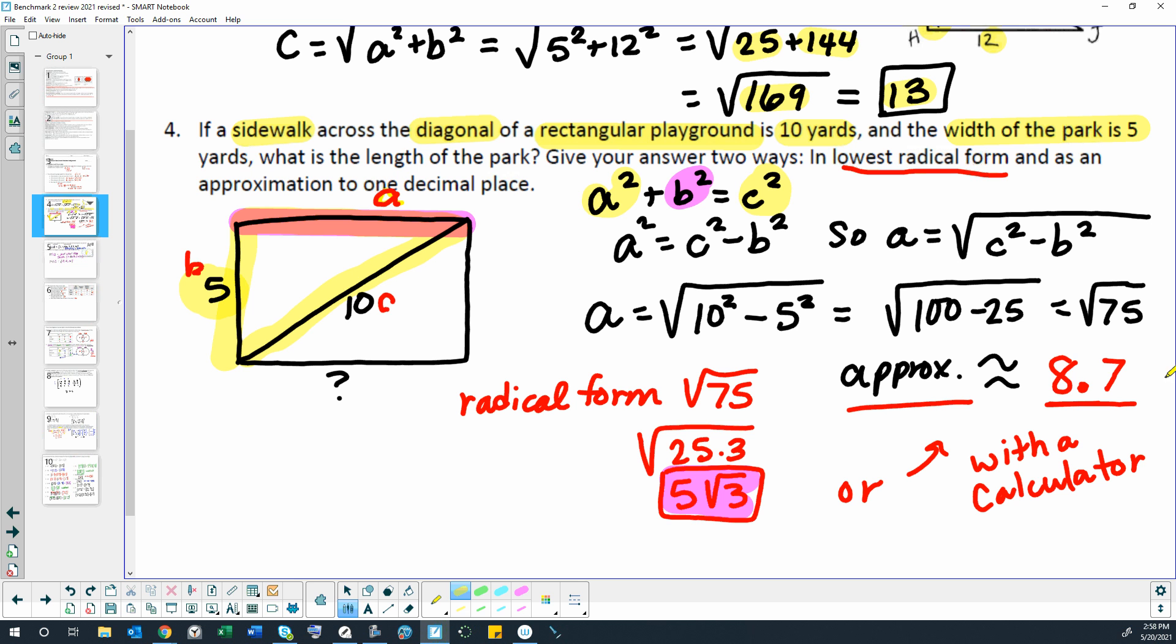Our lowest radical form is 5 square root of 3. That's an exact answer, but really for all practical reasons, we're just going to want the approximate 8.7.